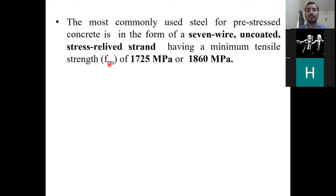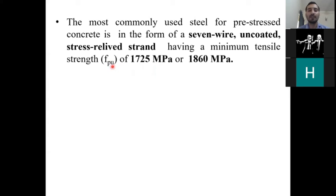So when I talk about 1725 MPa for prestressing steel, it means the ultimate strength of your steel wire or strand. For normal steel, the grade reflects yield strength. But for pre-stress steel wire or strand, for example 1725 MPa, it means the ultimate strength. Some students ask: why do you not use yield strength for prestressing steel? Let us see the answer.